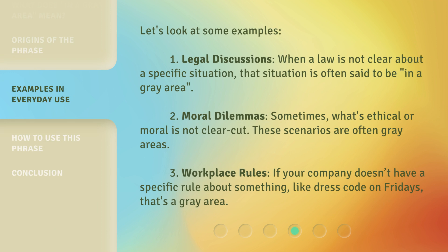Let's look at some examples. 1. Legal discussions: when a law is not clear about a specific situation, that situation is often said to be in a gray area. 2. Moral dilemmas: sometimes what's ethical or moral is not clear-cut — these scenarios are often gray areas. 3. Workplace rules: if your company doesn't have a specific rule about something, like dress code on Fridays, that's a gray area.